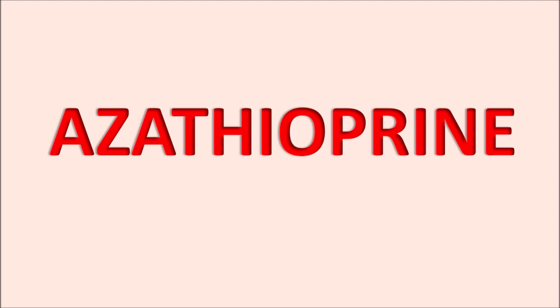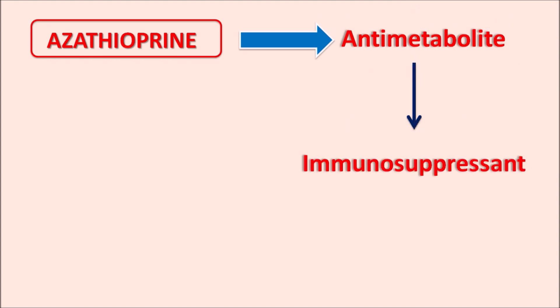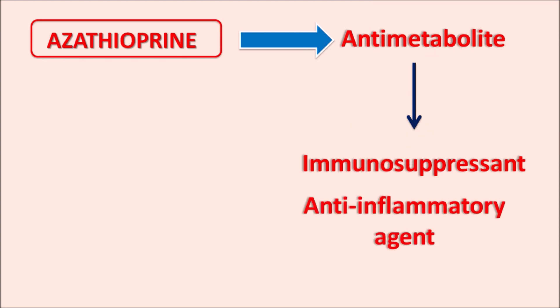Today we are going to discuss azathioprine. This drug is classified as an anti-metabolite, since it is converted into a false nucleotide and inhibits DNA synthesis. Azathioprine is used as an immunosuppressant during organ transplantation to suppress the host's immunity and prevent organ rejection. It is also used as an anti-inflammatory agent for conditions like rheumatoid arthritis and other inflammatory disorders.